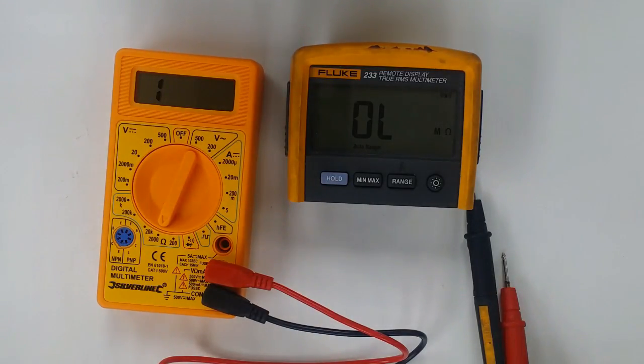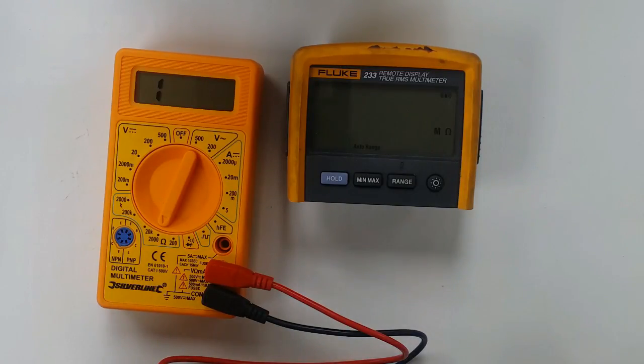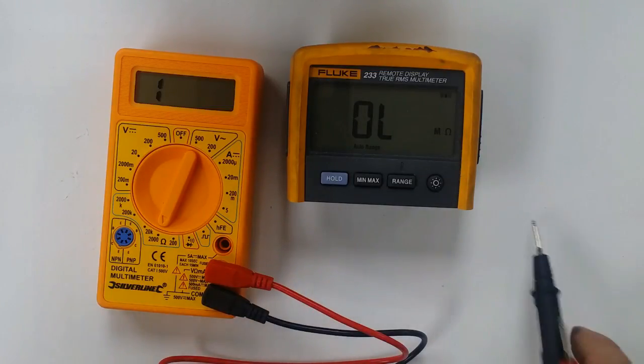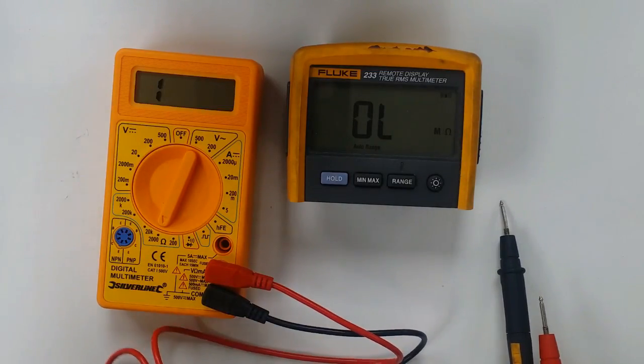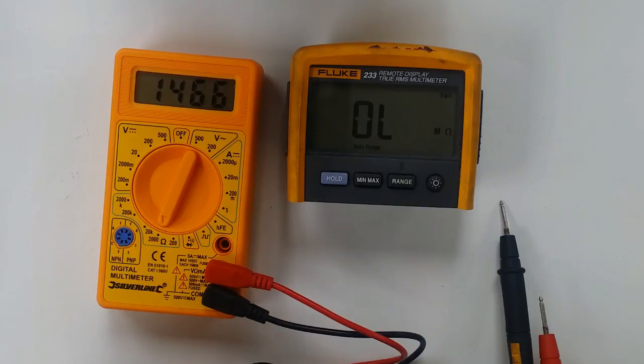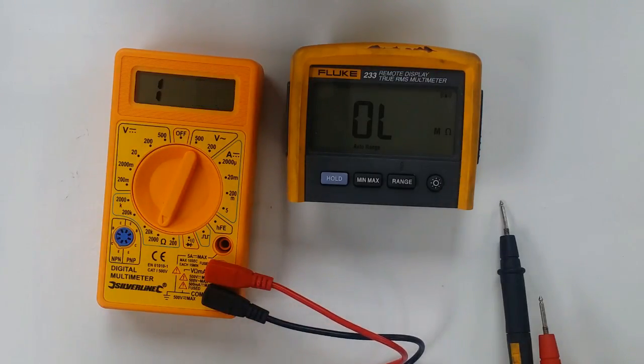To 1000 ohms. We use a resistor that should be 1500-ish. 1471 on the Fluke. That's not too bad in my book. 1466 on the Silverline. Very good.